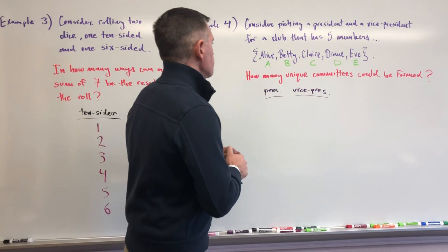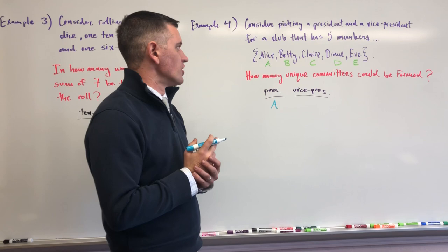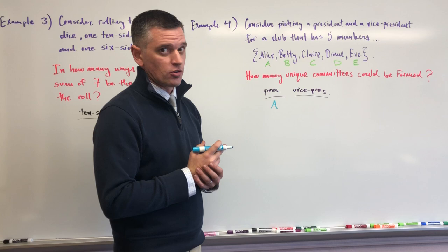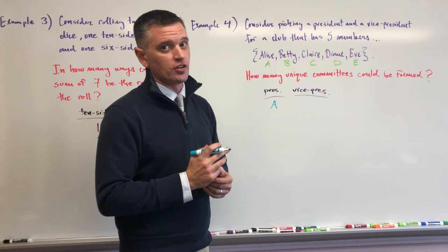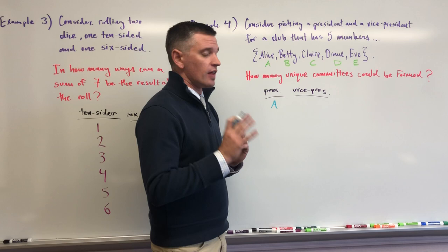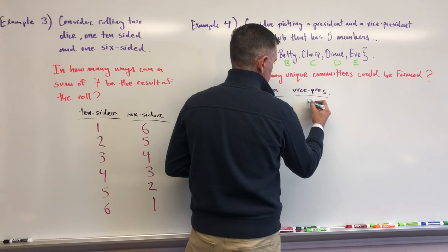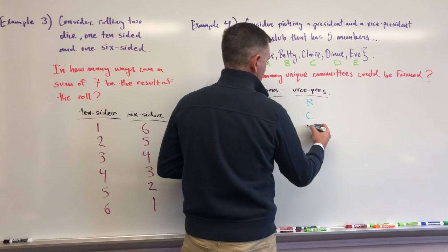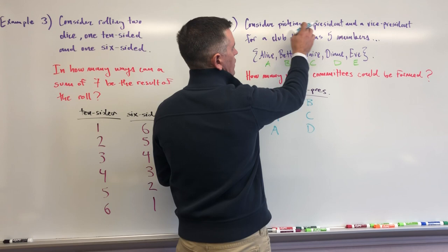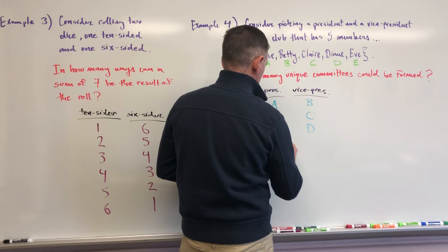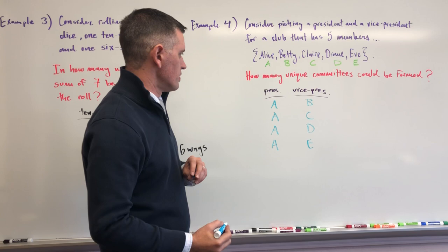The first thing I want to consider is all the ways we could make a committee with Alice as president. To preserve the integrity of power structures, if Alice is president she shouldn't also be vice president — that's a given we'll apply to all committees. So if Alice is president, she could have Betty as vice president, Claire, Diane, or Eve. You can write these as A-B, A-C, A-D without labels — just remember you're thinking president and vice president. There are four ways Alice can be president.